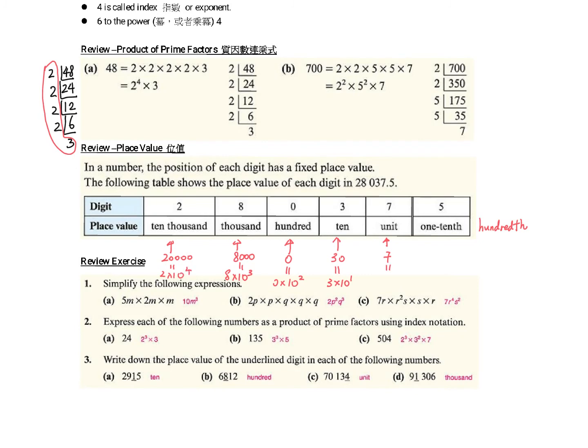This is 7 times 10 to the power of 0. From the law of indices, 10 to the power of 0 equals 1. If you don't write it, it's just 7. This is place value.